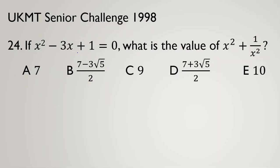When you see problems like this, one way is to find the root — find x and replace. But another way, which is much more useful and can be applied to harder problems, is: from the assumption x squared minus 3x plus 1 equals 0, we can rearrange so that x squared equals 3x minus 1. This idea is very useful and can solve many hard problems.